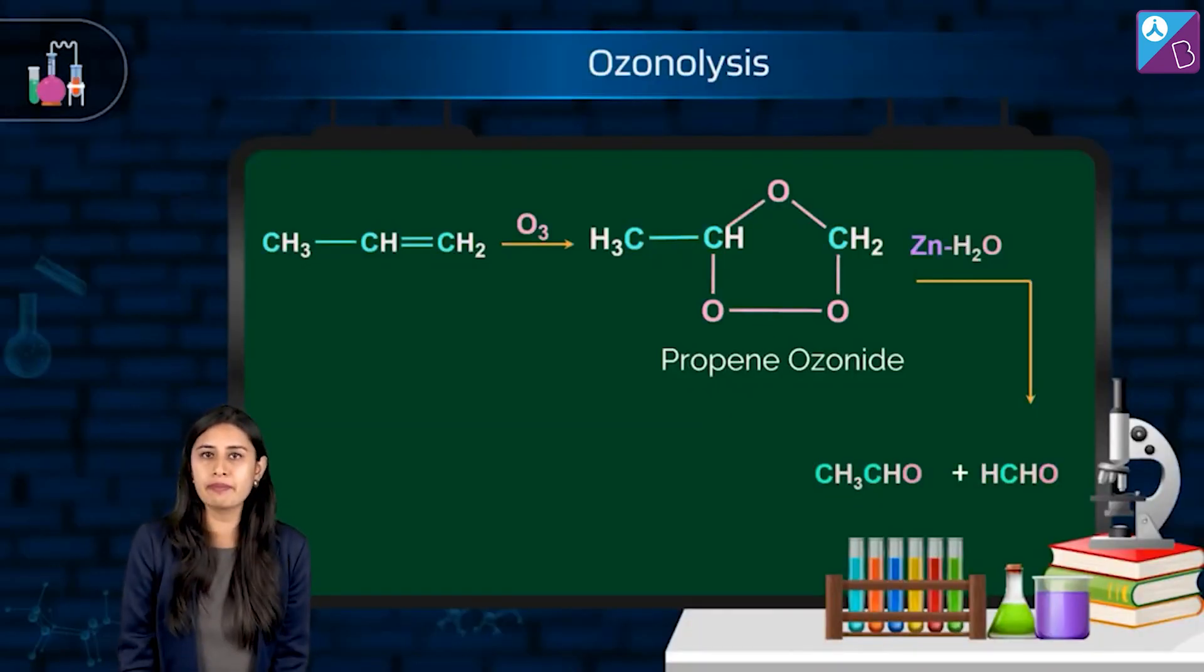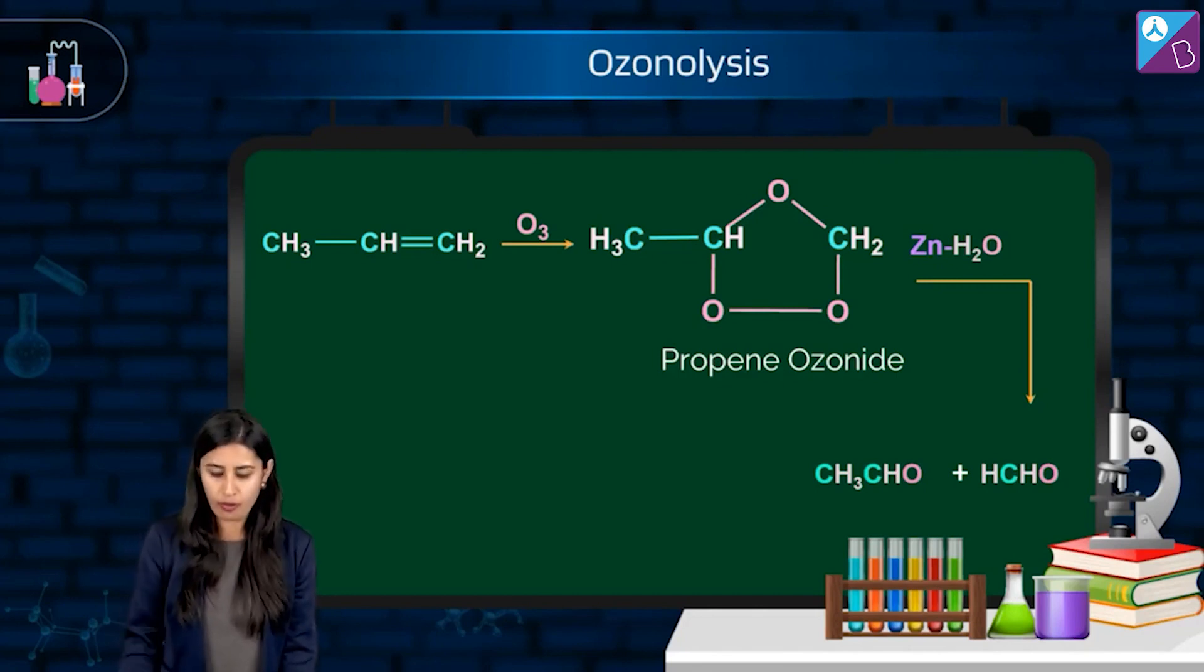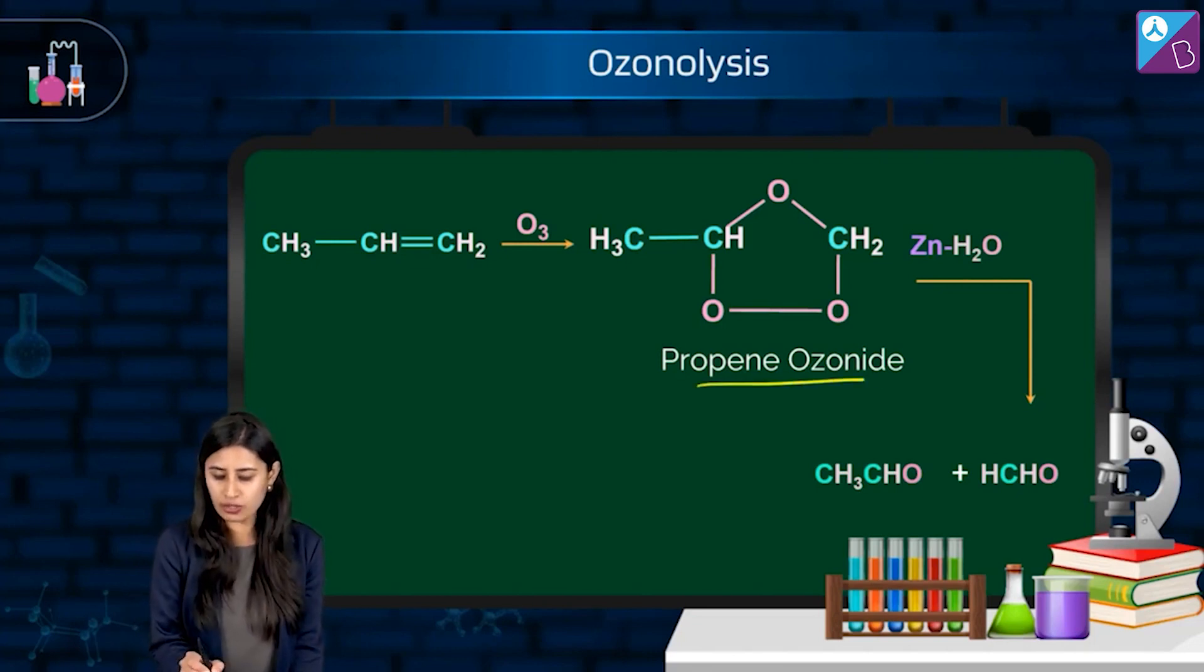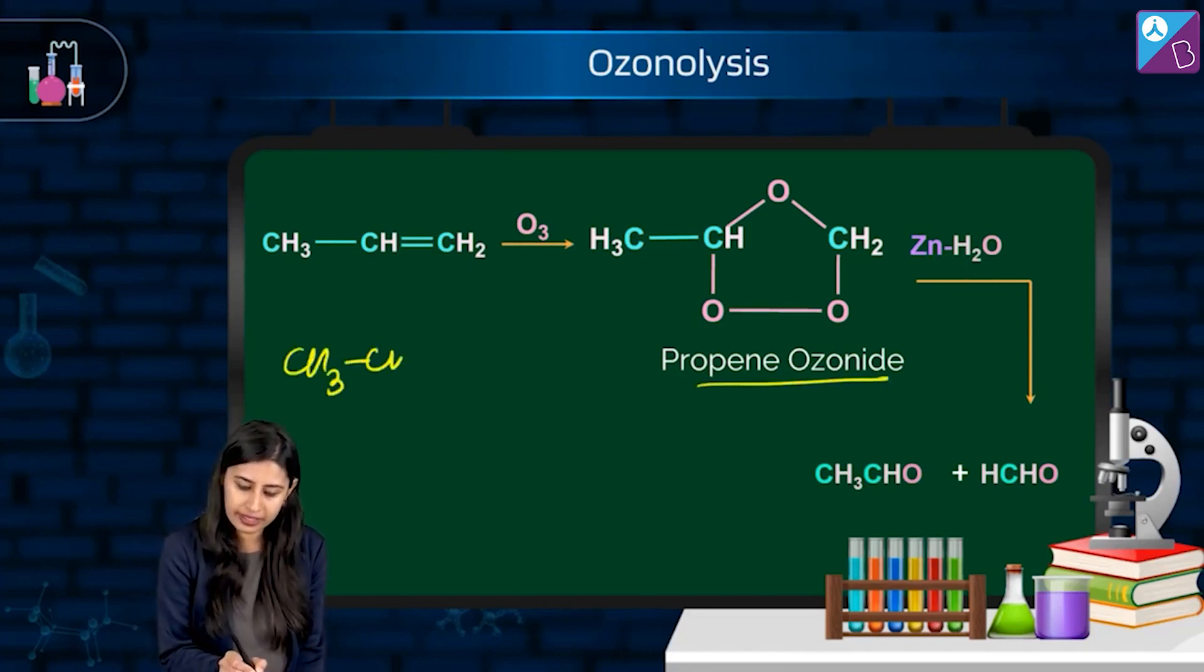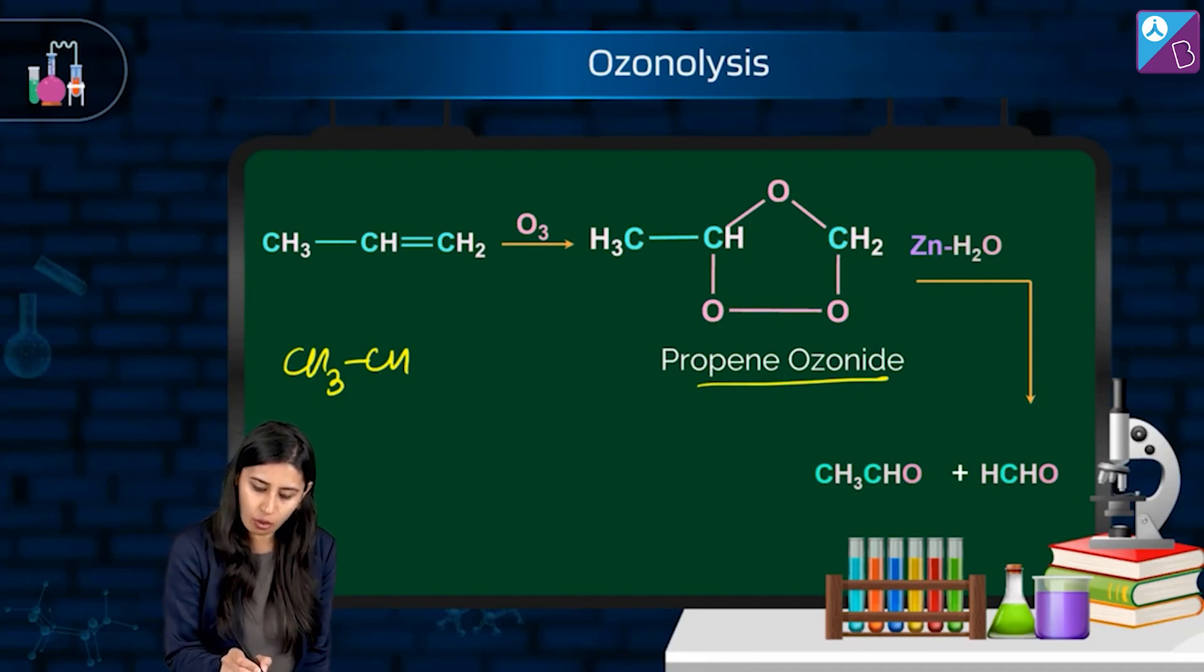Let's take examples. First one, propene. Let's add O3 to it. What we are getting is this propene ozonide. You have understood from the mechanism previously that O3, right?